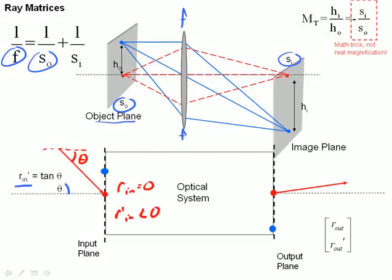R prime n is less than zero since it's a negative number. However, the ray of light coming out has R out equals zero since it's sitting on the optical axis and a slight positive slope, R prime out.